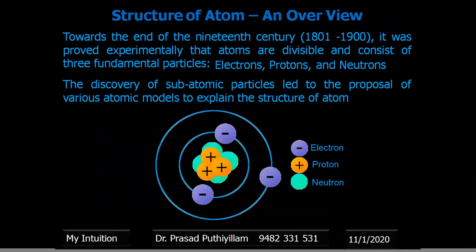Towards the end of the 19th century, it was proved experimentally that atoms are divisible and consist of three fundamental particles, namely electrons, protons, and neutrons. The discovery of these subatomic particles led to the proposal of various atomic models to explain the structure of atoms.